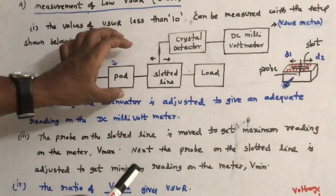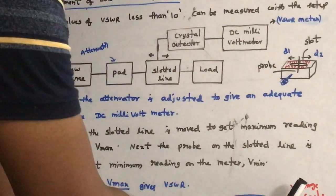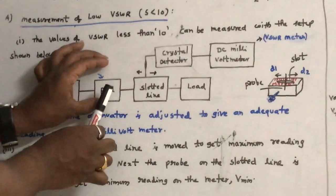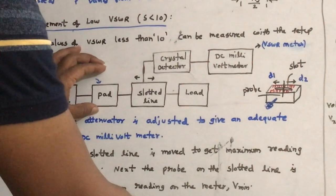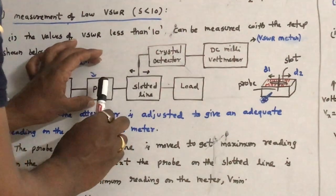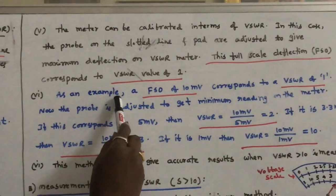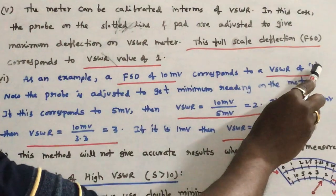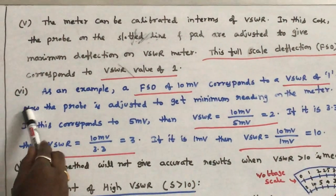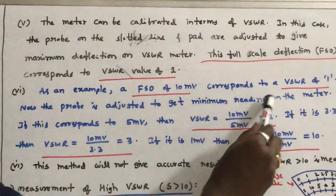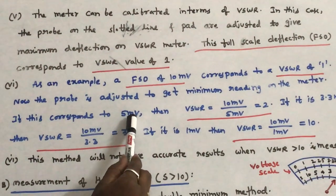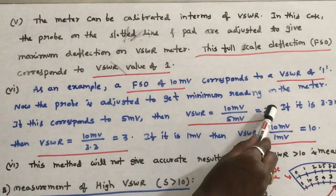As an example, a full scale deflection of 10 millivolts corresponds to a VSWR value of 1. Now the probe is adjusted to get the minimum reading on the meter. Suppose the meter shows 5 millivolts, then VSWR = 10 mV / 5 mV = 2.